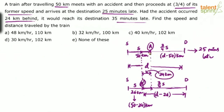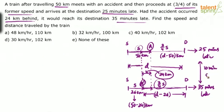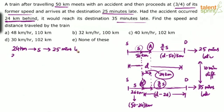In the first case, this 24 kilometers was covered at speed S; in the second case, the same 24 kilometers was covered at three-fourths of S. Overall, the train was late by 35 minutes in the second case versus 25 minutes in the first case — a time difference of 10 minutes. This 10-minute difference arises solely because of this additional 24-kilometer stretch being covered at a reduced speed.